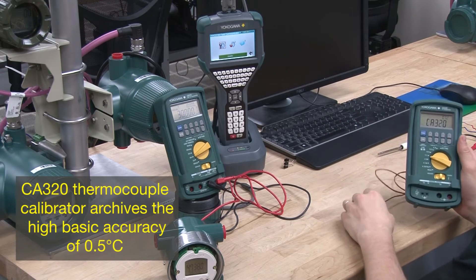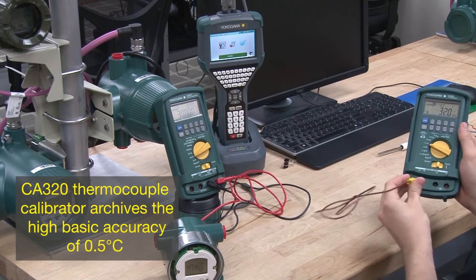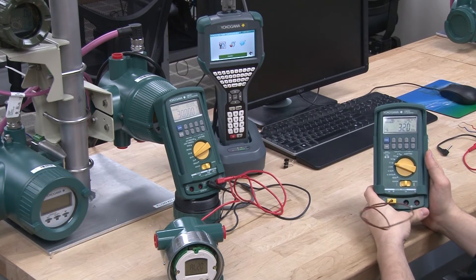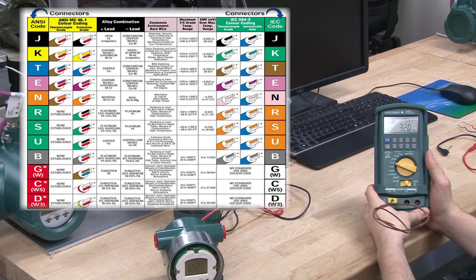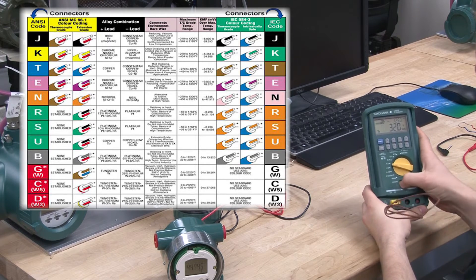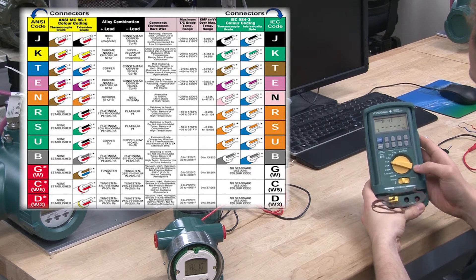The CA320 thermocouple simulate model calibrator achieves the high accuracy of 0.5 degrees C and corresponds to 16 types of thermocouple with the most common types being J, K, T, and E.